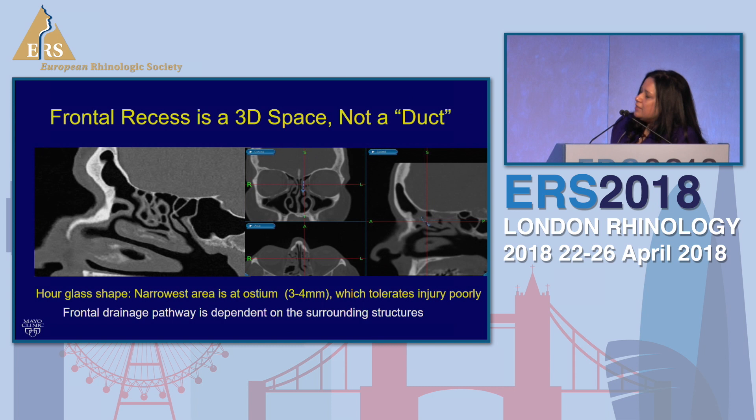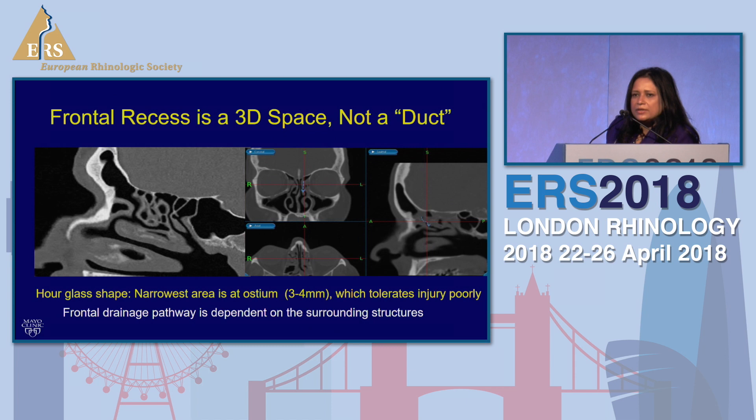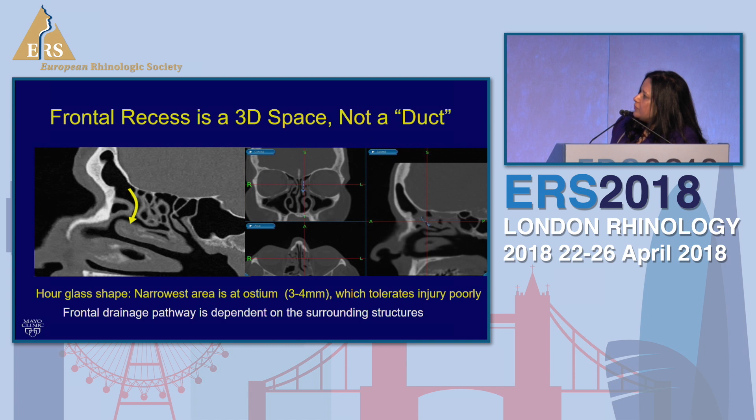The entire pathway is known as the frontal sinus drainage pathway. Conventionally, the narrowest area here is about 3 to 4 millimeters, and we call it the frontal ostium. But there is not an ostium you can find when you look in there like you see in the sphenoid or maxillary sinuses — just be aware of that. Our goal is to drain the frontal sinus through this convoluted hourglass-shaped structure into the nose.